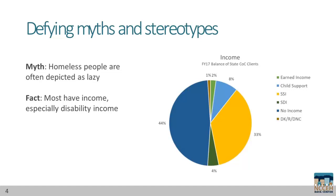Too often, homeless people are viewed as lazy and unmotivated. This chart is from the 2017 Federal Fiscal Year NC Balance of State COC. You can see that almost half have some sort of income, especially disability income.